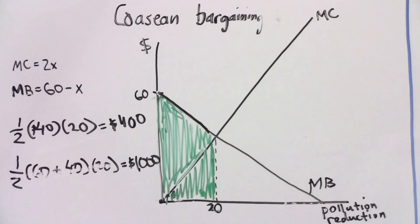As long as bargaining between you and your neighbor is costless, and as long as the government enforces any agreement you make, you and your neighbor will strike a bargain in which you pay your neighbor between $400 and $1,000 to reduce pollution by 20 pounds. Ronald Coase went on to show that, as long as property rights are well enforced and transaction costs are zero, individual bargaining will lead to the efficient level of pollution reduction regardless of how pollution rights are initially distributed. This theoretical result is known as the Coase theorem.